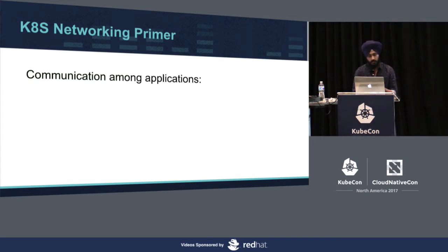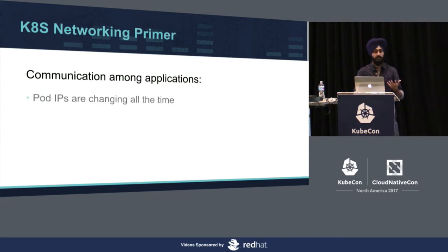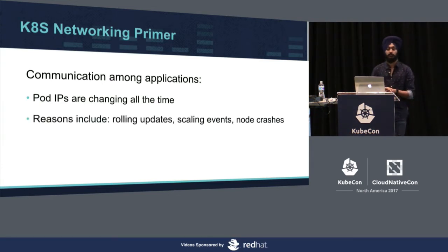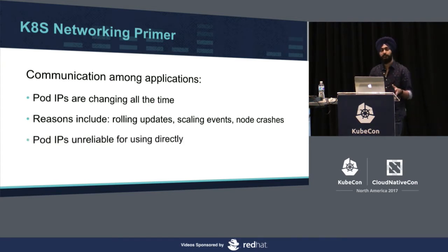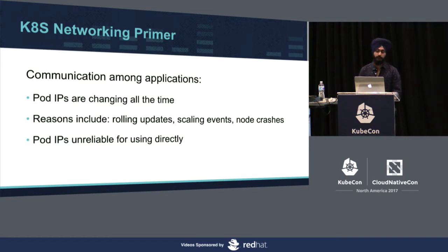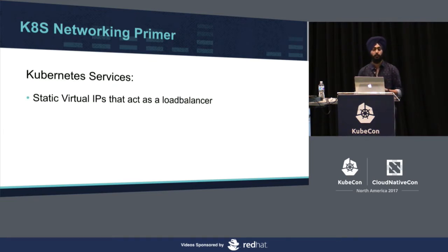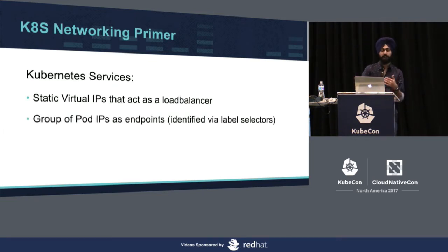Talking about communication among applications: due to the dynamic nature of Kubernetes, pod IPs are changing all the time. The IP for the same pod isn't changing, but since pods are always changing — due to rolling upgrades, scaling events, or node failures — pod IPs are very unreliable for service-to-service communication. The better solution is Kubernetes services, which is essentially a static virtual IP that acts as a load balancer sitting in front of a group of pod IPs identified by label selectors.